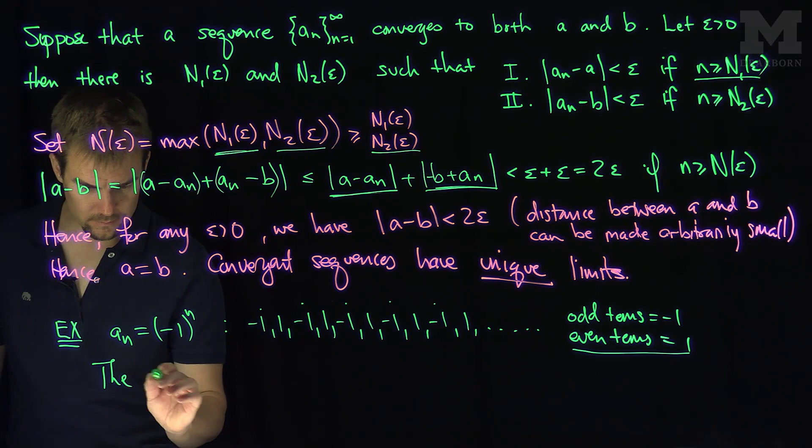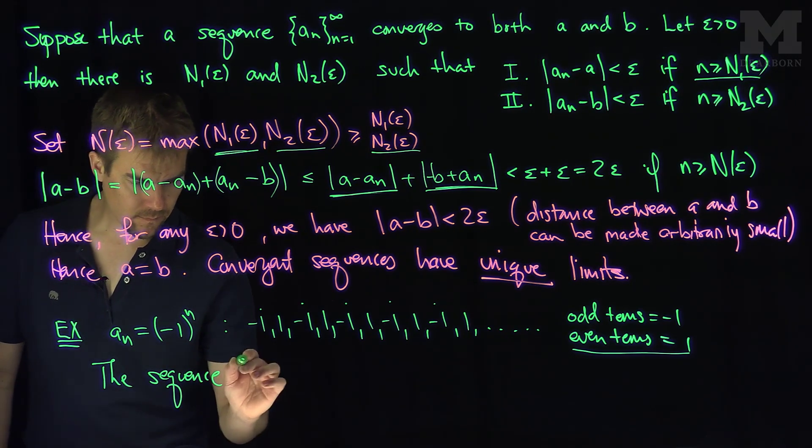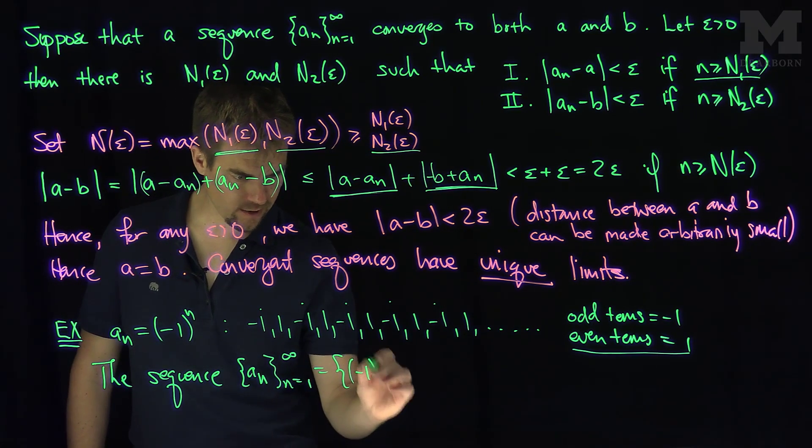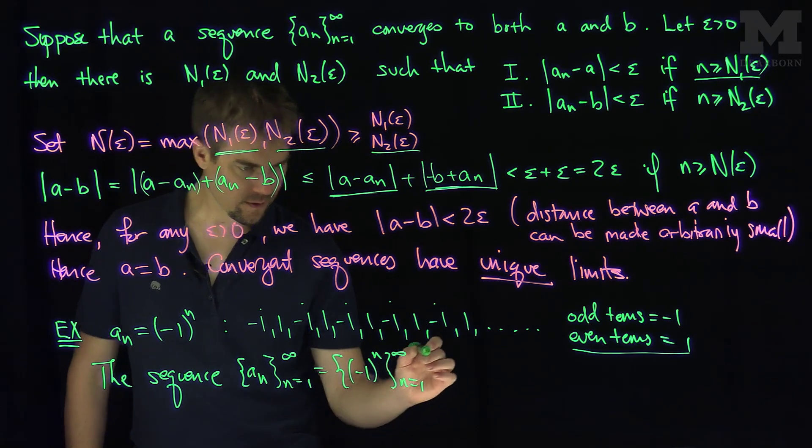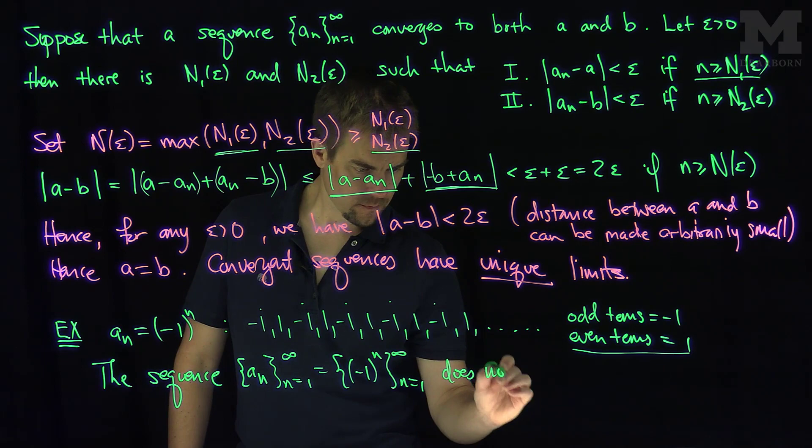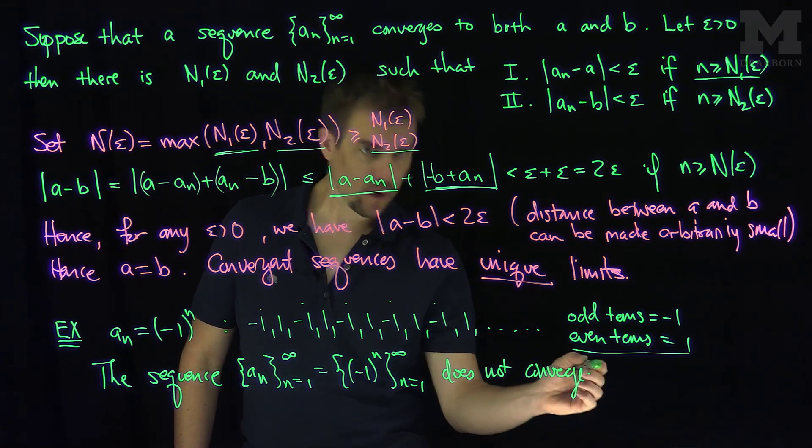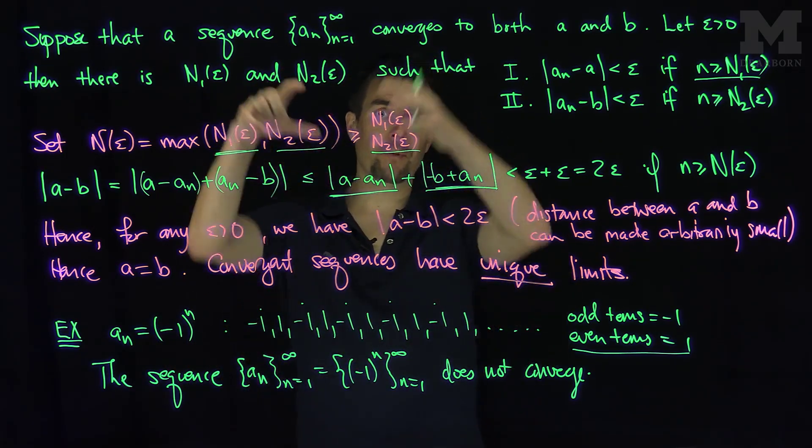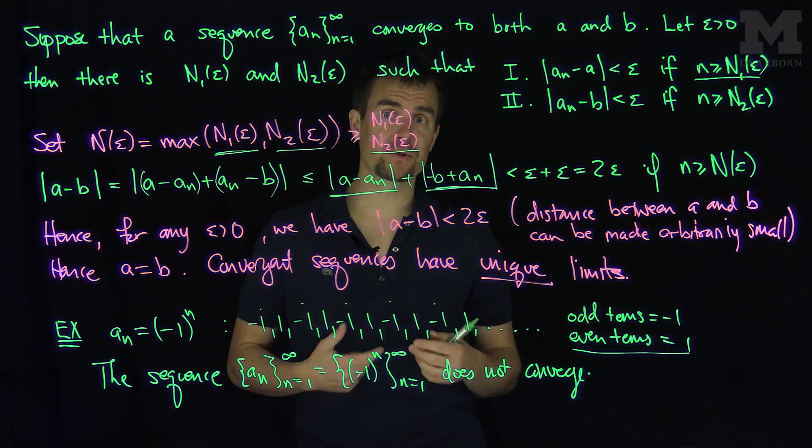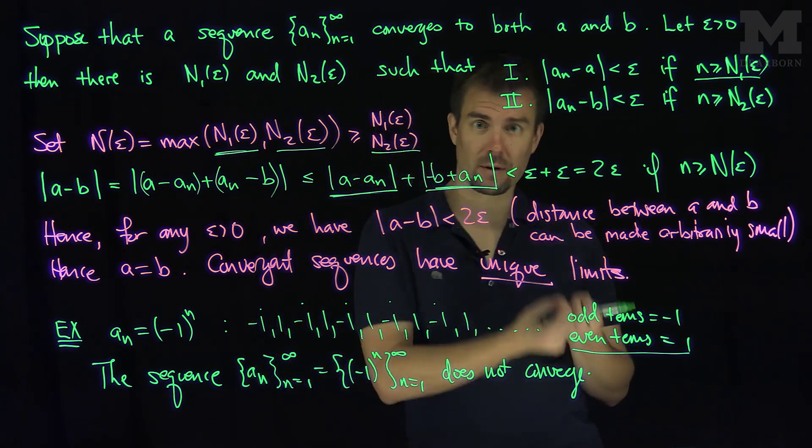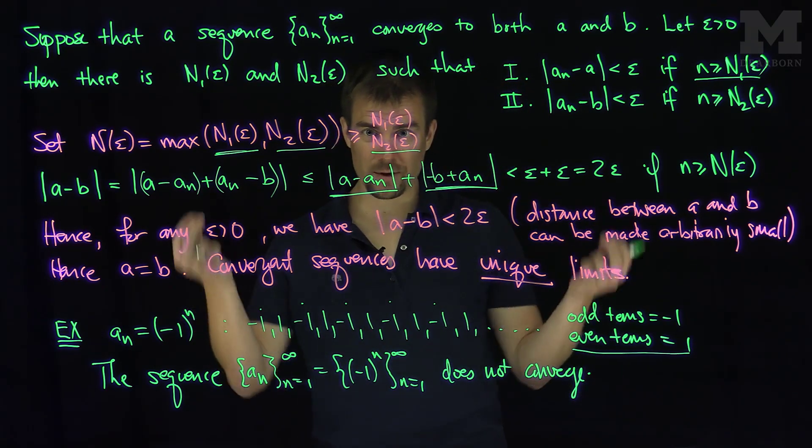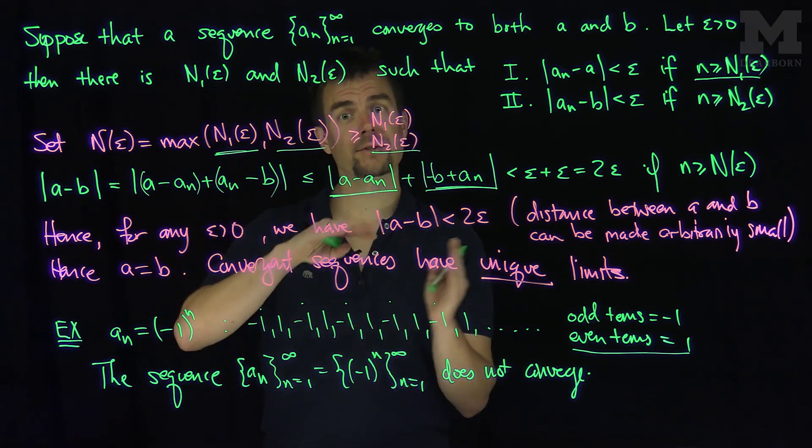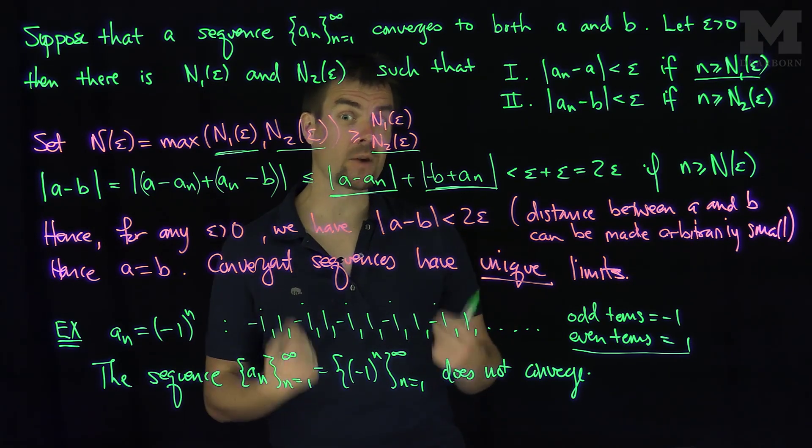So the sequence a_n, which is negative one to the n, does not converge. You can use this exact same argument to prove that it doesn't converge. It's a good exercise to replicate this argument for the uniqueness of limits. But we can sort of see roughly that the even terms are all equal to one, so they're close to one. And the odd terms are all close to negative one. So we're going between one and negative one, which means infinitely often we're not close to, for all values of n past a certain threshold, we're not arbitrary close to exactly one of those values.